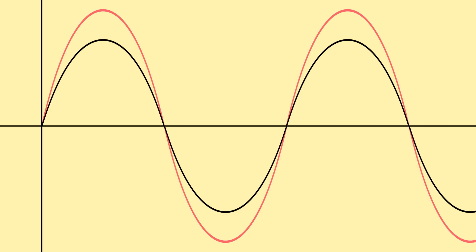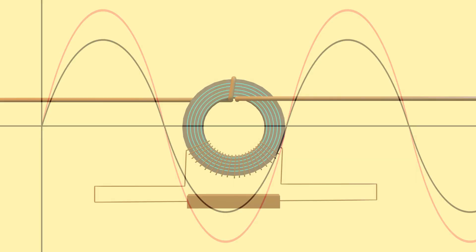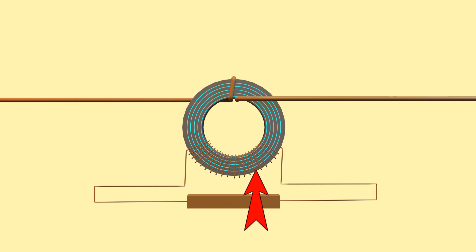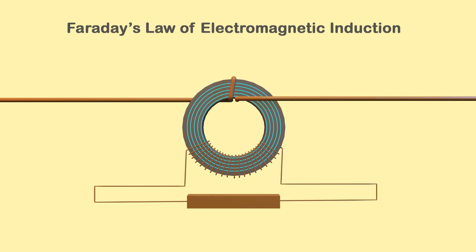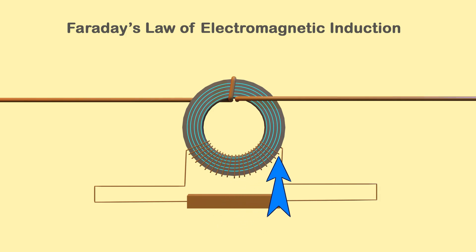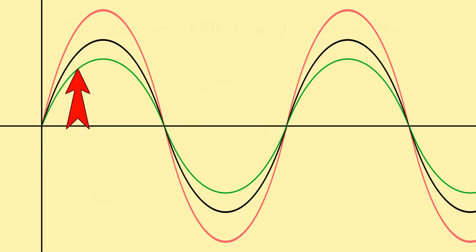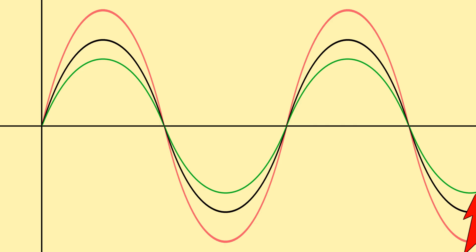The flux alternates in the positive and negative directions in a sinusoidal pattern. This alternating flux links with the CT secondary winding. According to Faraday's law of electromagnetic induction, this changing flux induces a voltage across the CT secondary winding. If the secondary circuit is connected to a burden, this induced voltage causes a current to flow through the CT secondary circuit. Therefore, the secondary current will follow the primary current and will have the same sinusoidal waveform but with reduced magnitude. This is ideally how the secondary current appears.